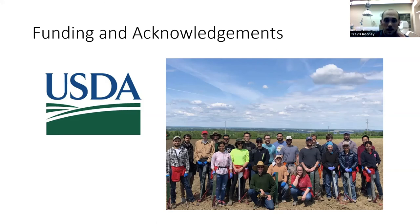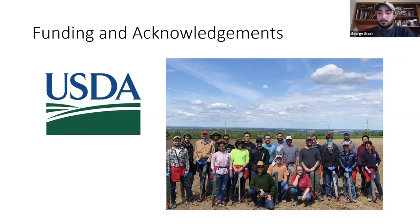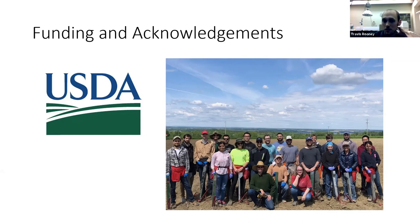A question from Kevin: how many accessions of Tripsicum do you intend to look at and assess natural variation? We're looking at about 10 accessions — that's a pretty wide range; we've got T. floridanum and T. dactyloides and some of their crosses as well. If anyone doesn't have time to ask a question, please send me an email — I'd love to have feedback and pushback on this idea.